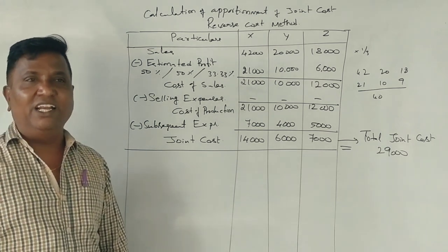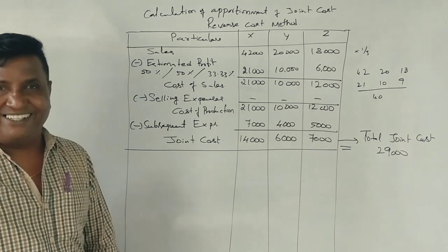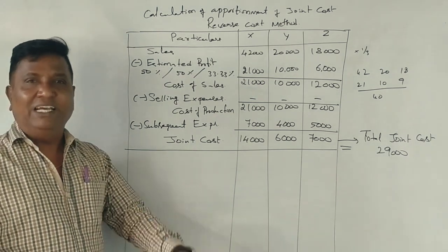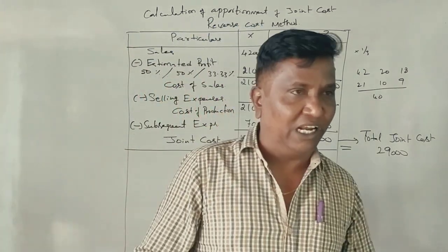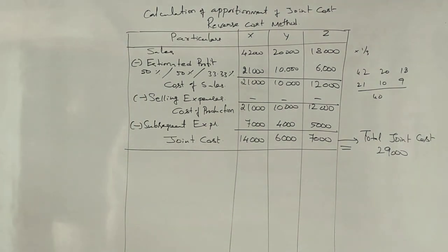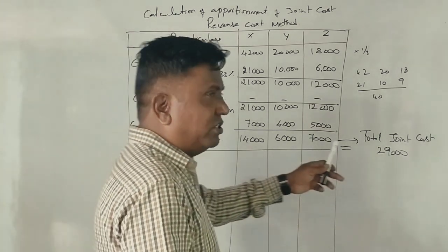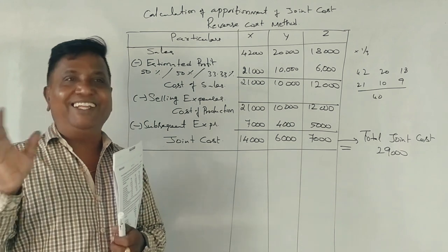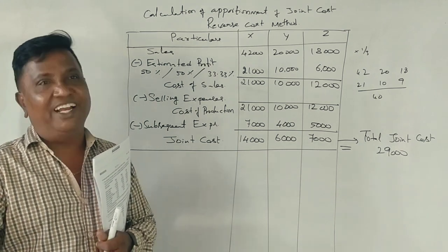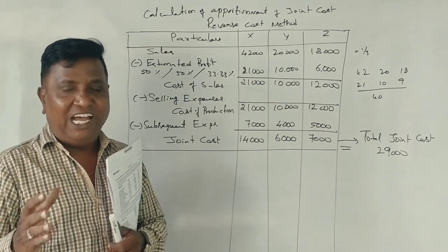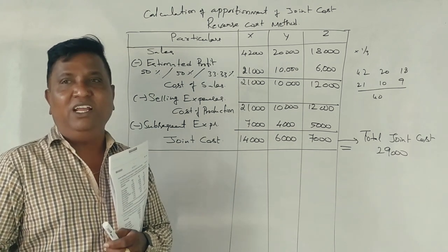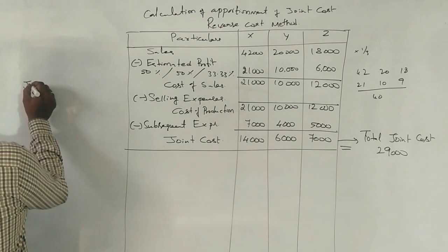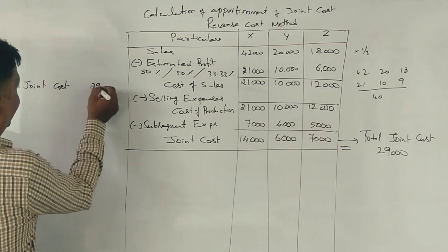One word add. There is selling expenses in the processes. There is selling expenses for the products X, Y, Z. The current cost given is 29,000. The joint cost was 29,000.